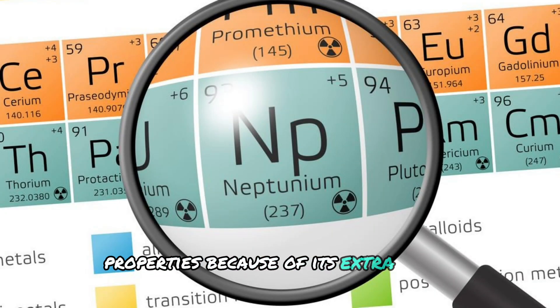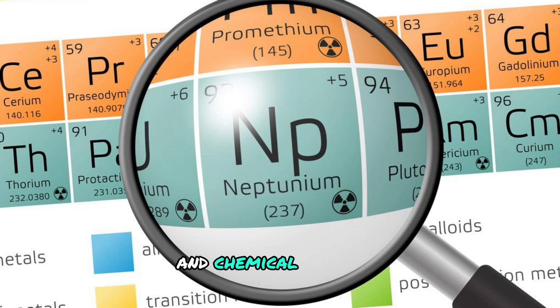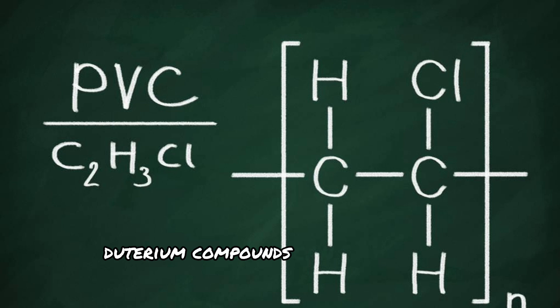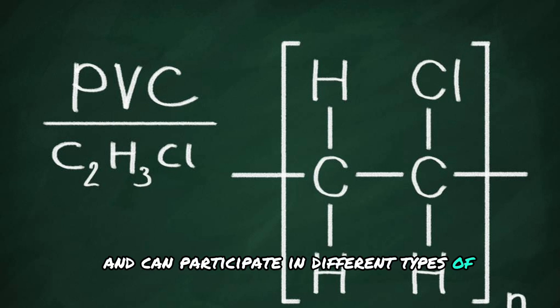Properties: Because of its extra neutron, deuterium has slightly different physical and chemical properties compared to protium. For example, deuterium compounds can have different boiling points and can participate in different types of chemical reactions.